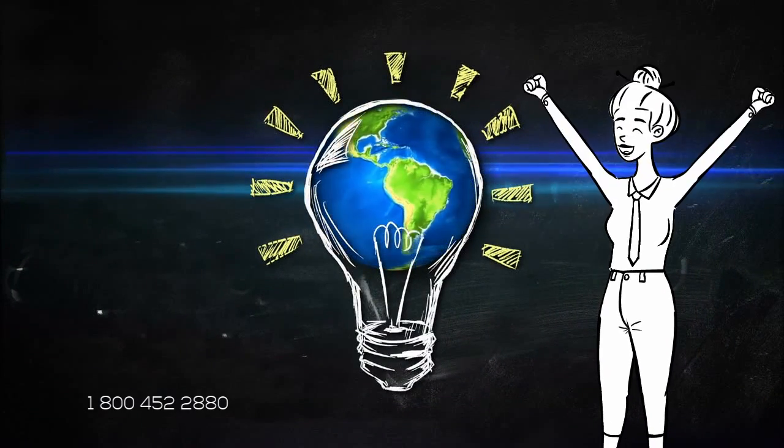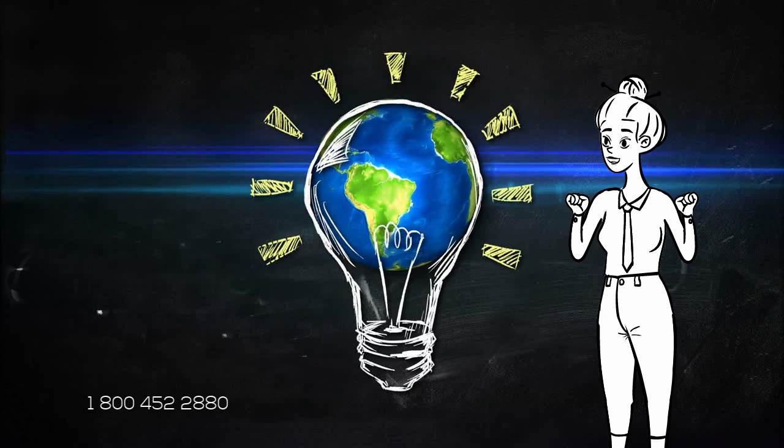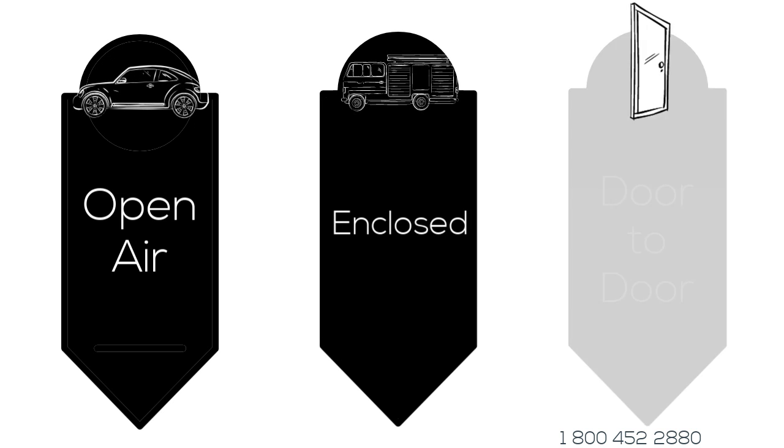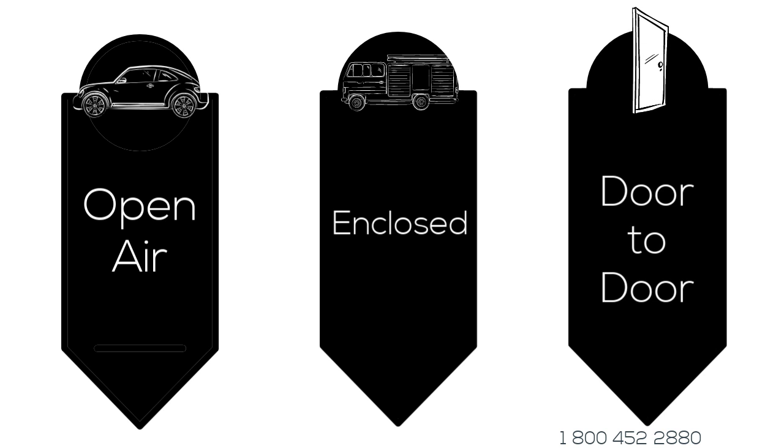We offer different types of shipping services that will fit any budget. Open Air, the fastest and cheapest way to transport your vehicle. Enclosed, a little more time to deliver, but protection from all the elements. Door to Door, a way to deliver your vehicle right to your doorstep.